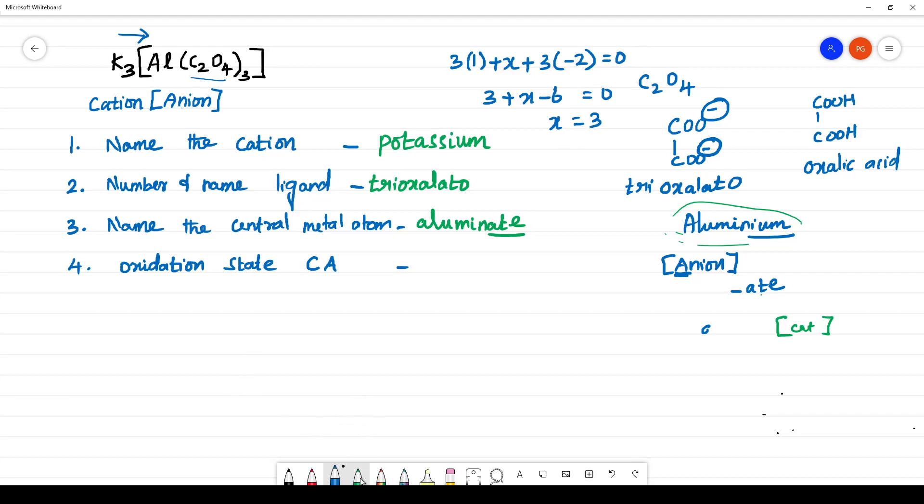What is the oxidation state of this aluminium? It is 3. You have to write in the Roman numeral inside the bracket.